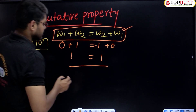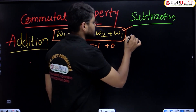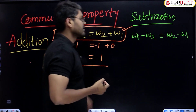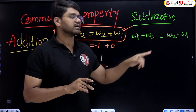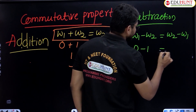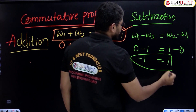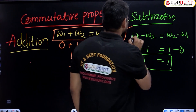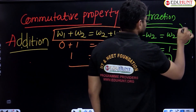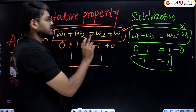Let us check subtraction under commutative property. W1 minus W2 should equal W2 minus W1. Take zero minus one equals one minus zero: zero minus one is minus one, and one minus zero is one. Minus one and one are not the same. So commutative property does not hold for subtraction in whole numbers.